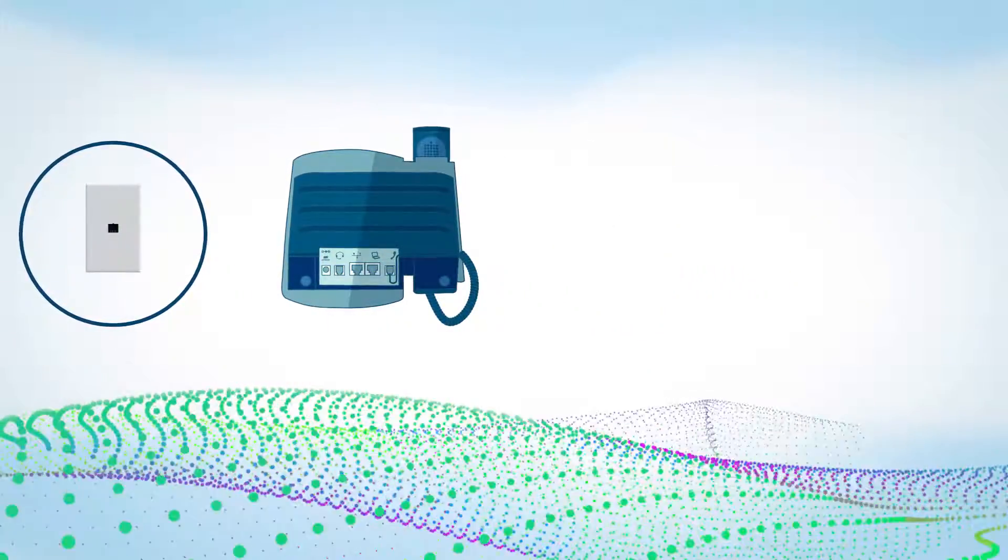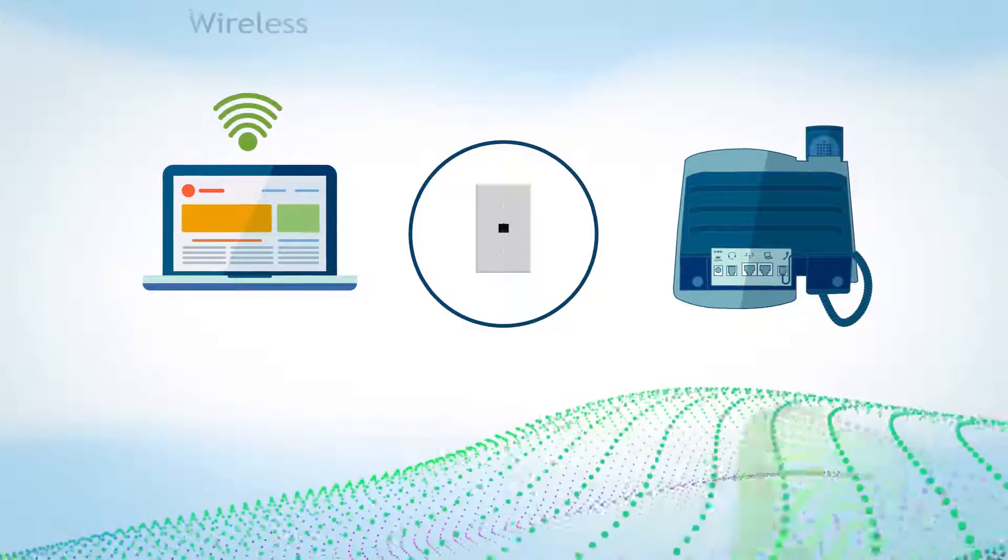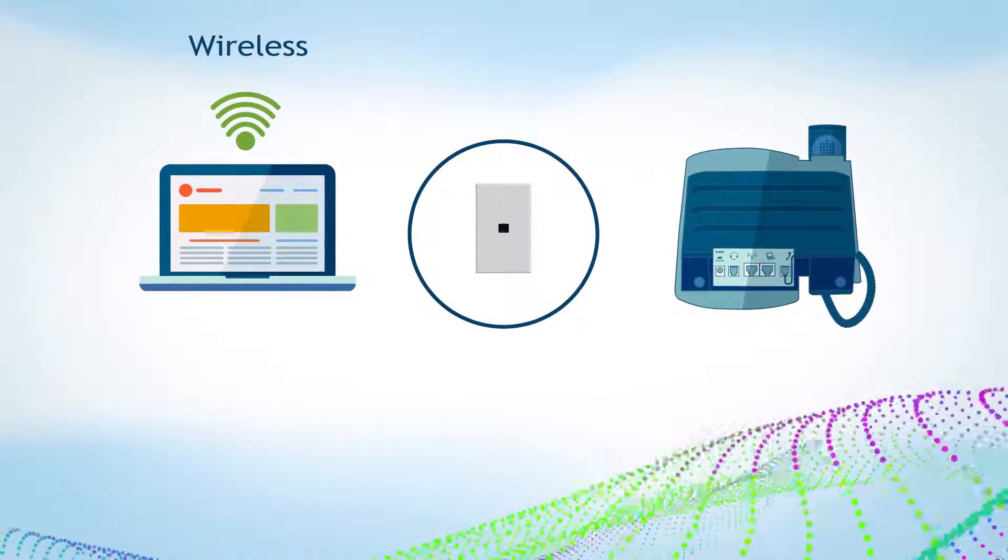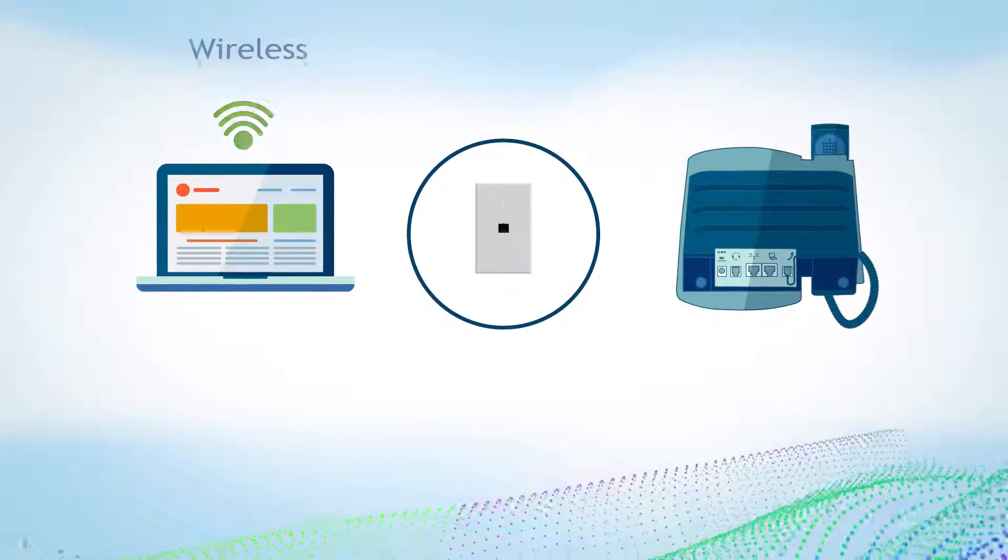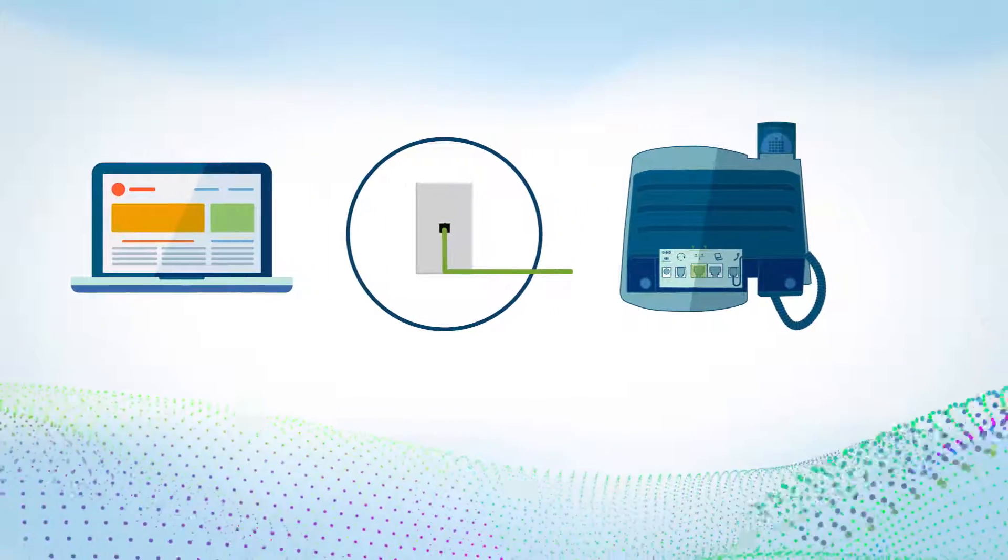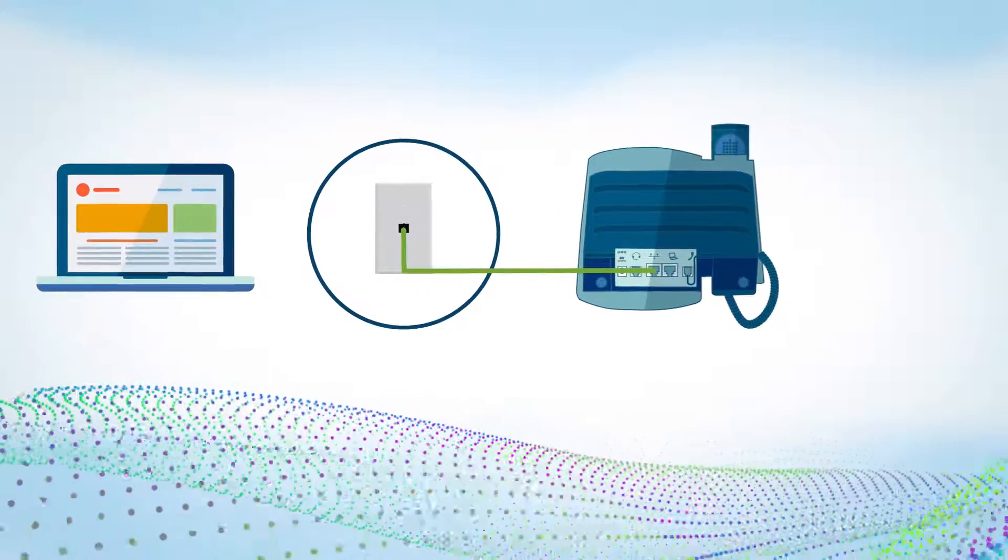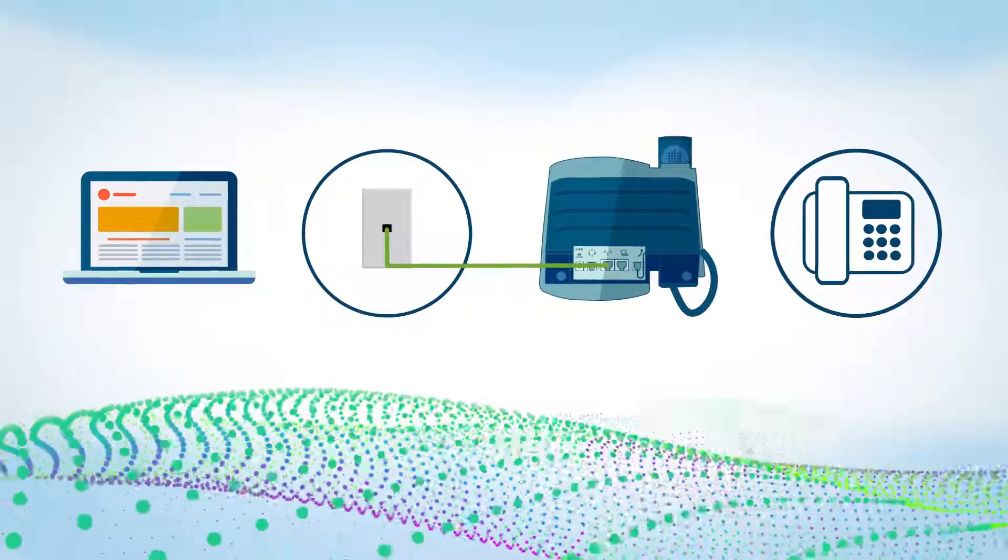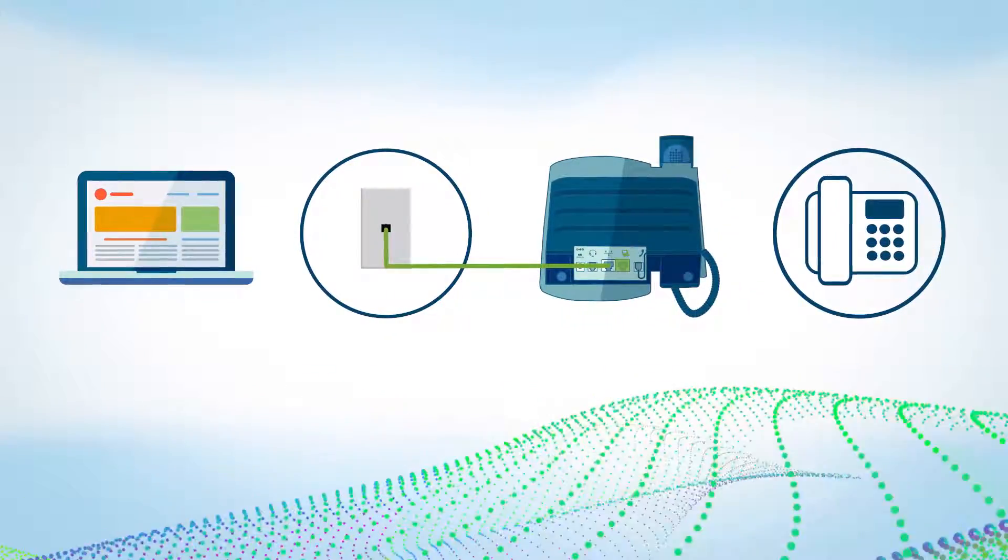If your computer connects to the Internet wirelessly, then simply plug one end of the provided Ethernet cable into the Internet wall jack and the other directly into the phone's network port. Again, your old phone can be temporarily connected to the computer port of the new phone for incoming calls.